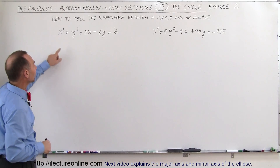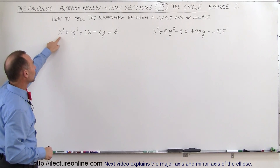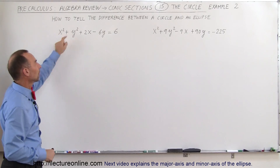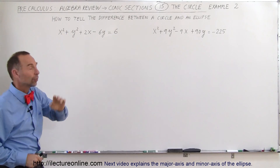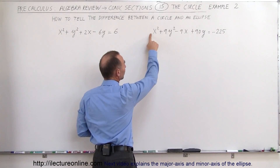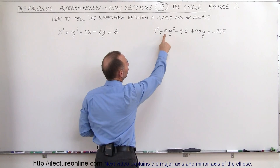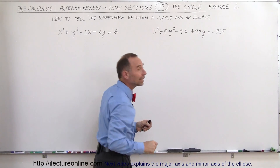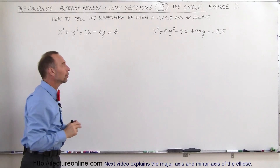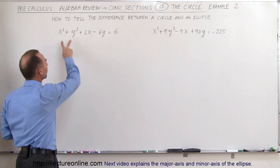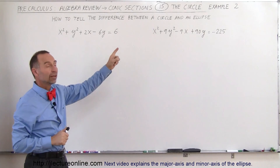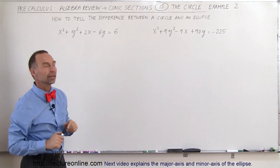Notice on the left side we have an equation where the x-squared term and the y-squared term have the same coefficients — both of them are 1. On the right side of the equation, you see that the coefficient of the x-squared term is 1 and the coefficient of the y-squared term is 9. That makes it not a circle. The two coefficients must be the same or it's not a circle. It turns out that it's probably an ellipse.